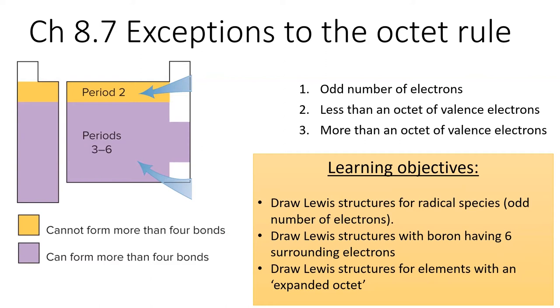The element boron is a strange element and is sometimes happy with only 6 valence electrons.